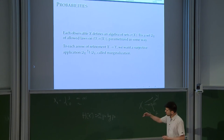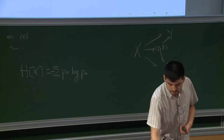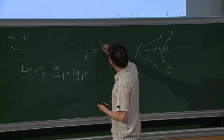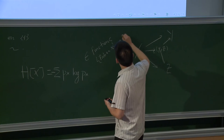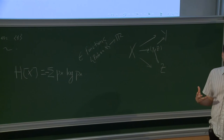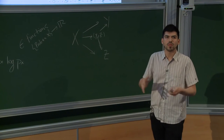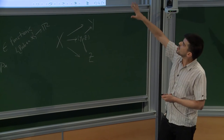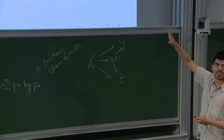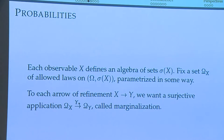A functional on this category is a certain function of the probabilities on the partition X. The natural space where these live is in the functions that go from probabilities on X to the real numbers. It is implicit in information theory that we want to play with families of probabilities — all the possible probabilities we could define on a partition. I will call these families of probabilities Q_X. On each X you have a sigma-algebra sigma_X, and you can consider a certain family Q_X parametrized in some way. Each time you have a refinement, I assume there is a surjective map from Q_X to Q_Y.